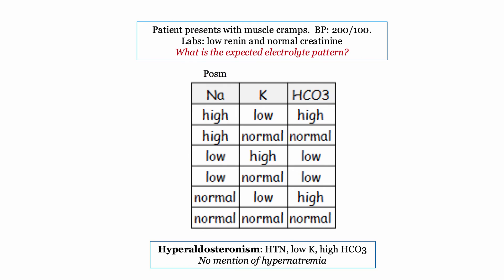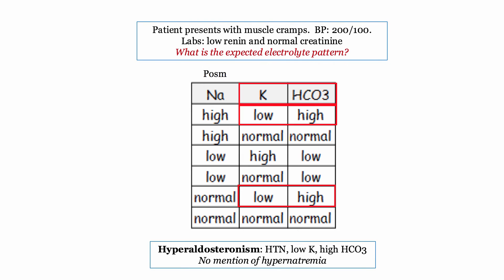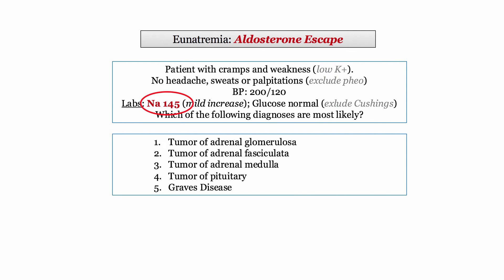How will this be tested on the boards? A patient presents with muscle cramps and a very high blood pressure. The renin level is suppressed, emphasizing the autonomous secretion of aldosterone. No one should struggle to identify the low potassium and high bicarb. The excitement comes with the sodium or plasma osmolarity: the answer is a normal sodium value. Occasionally they might include an elevated sodium in the question stem, but this should not be interpreted to suggest a sodium elevation is an expected manifestation in hyperaldosteronism vignettes.